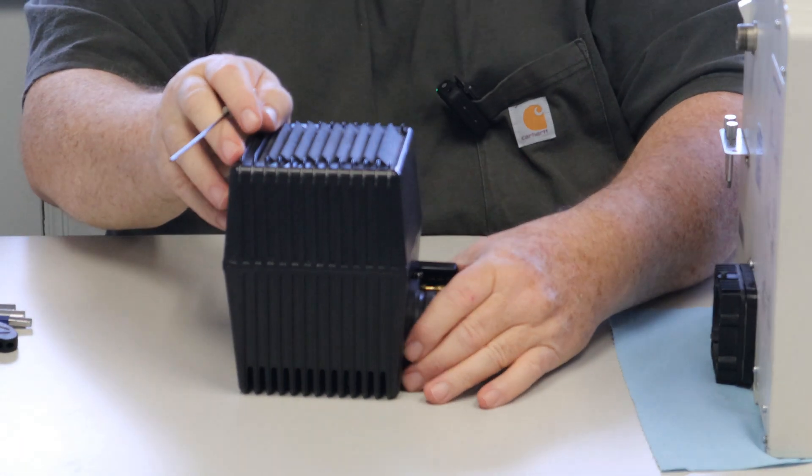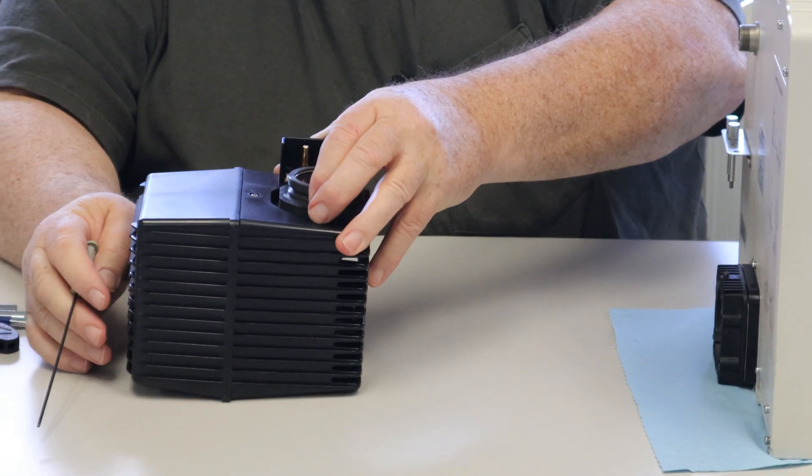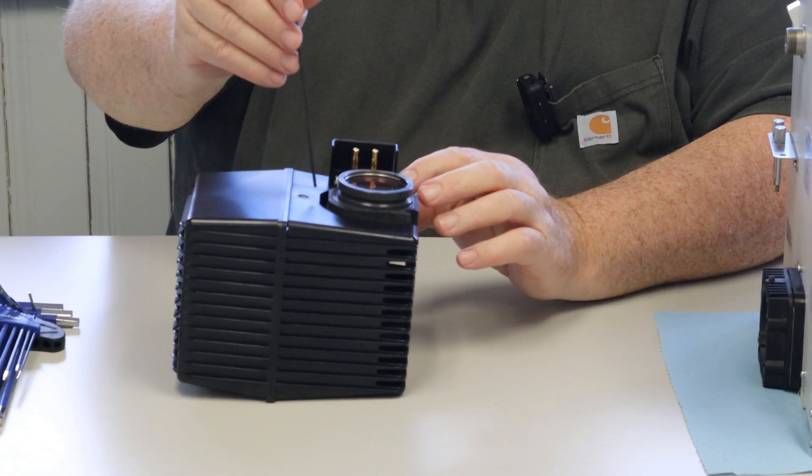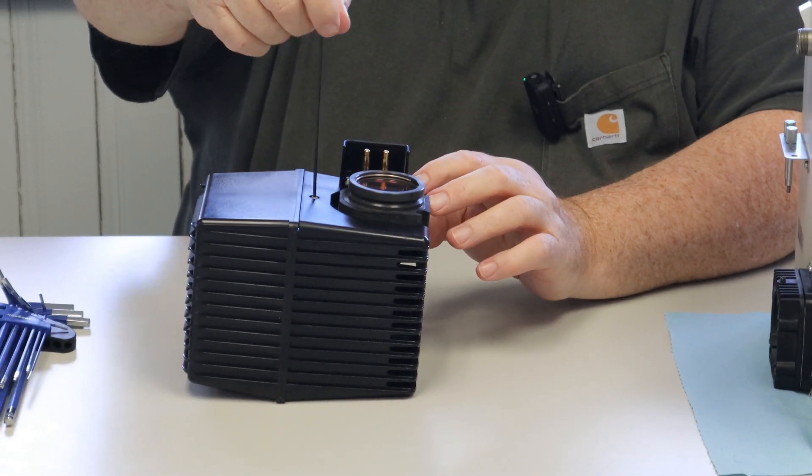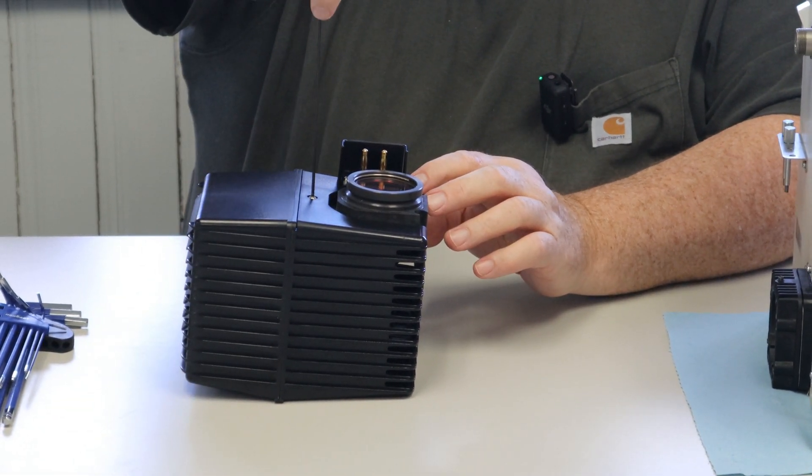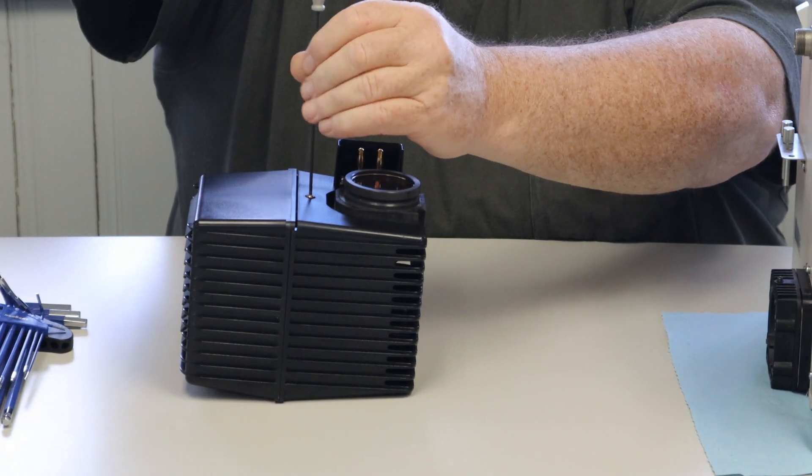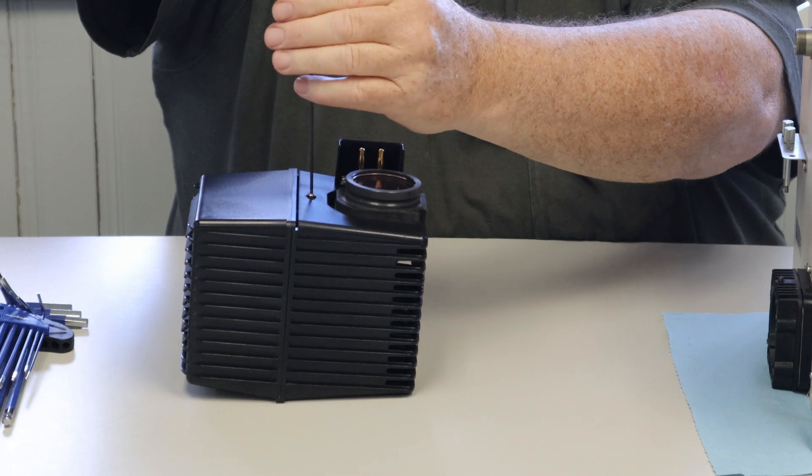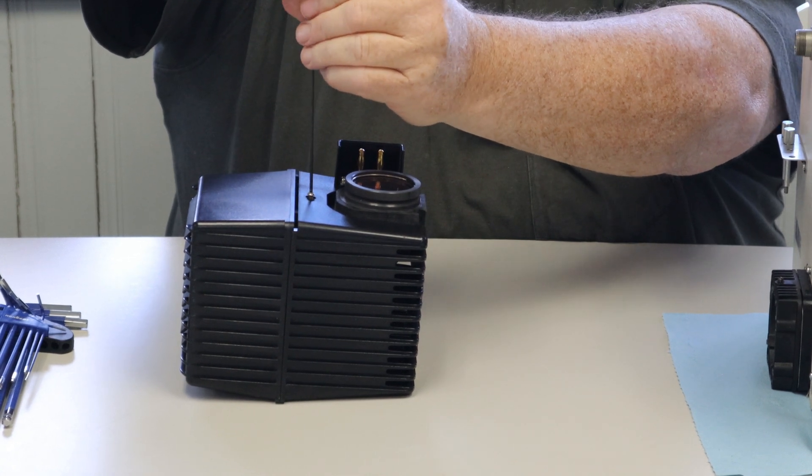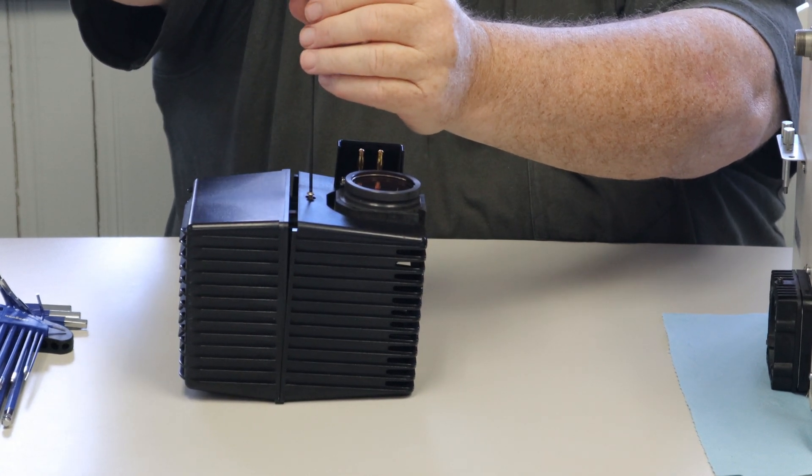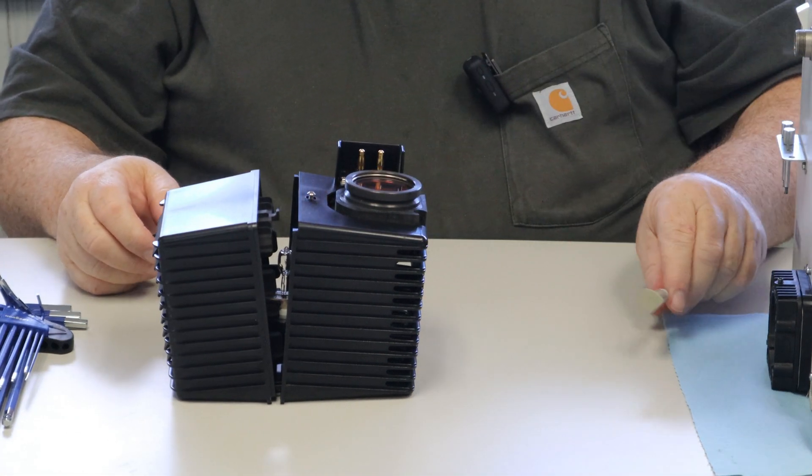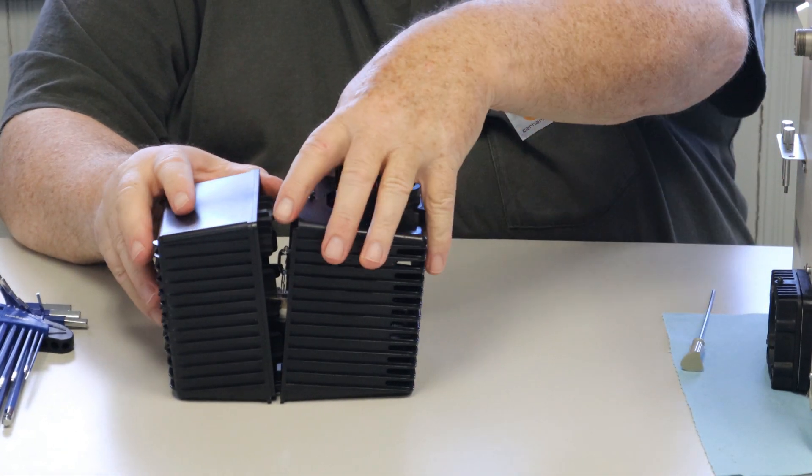Now using the same wrench, go to the front of the lamp housing and loosen the screw. Again, you don't have to take the screw all the way out. It has a lock washer on the other side to make that very hard to do. You can see how the lamp housing just falls apart like that.